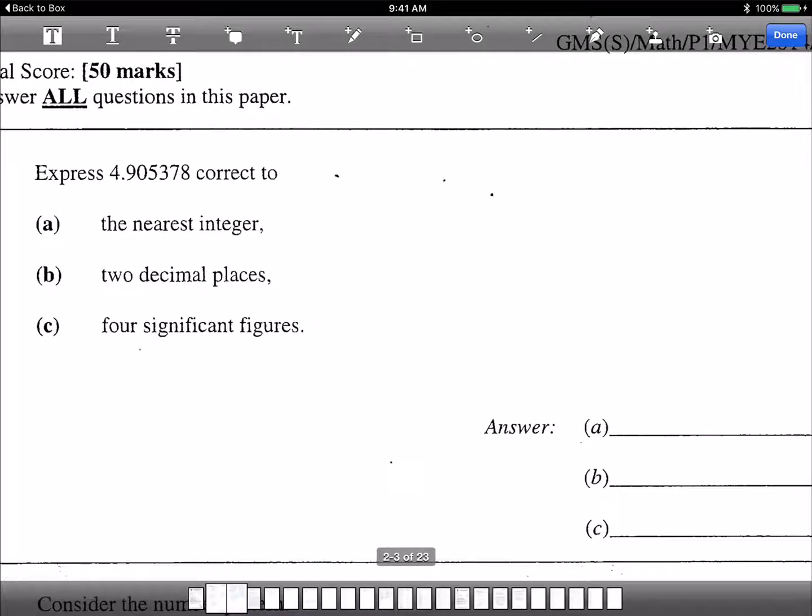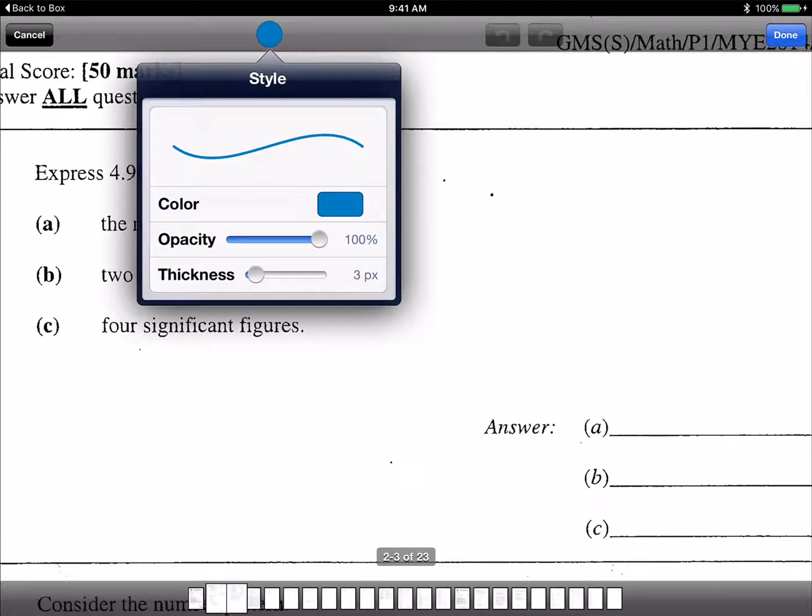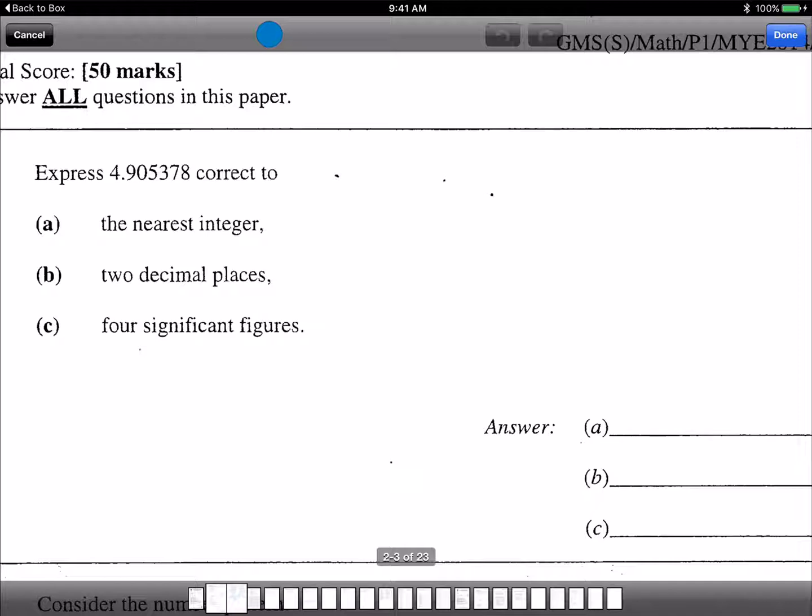So here part one. Quite easy. Express 4.9 correct to the nearest integer. So the nearest integer you look at the 4. Right? So the answer is just 5. So I have 5. So two decimal places. Second decimal place is here. You look at the third guy which is a 5. So it's just 4.91. Two decimal places. 4.91.